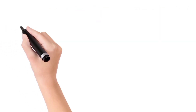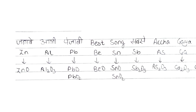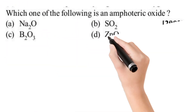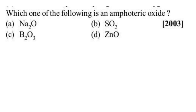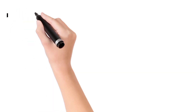Now you all, write down this trick and learn it too. Read it again and again so that it can be memorized well. Now with the help of the trick, give the answers to the given questions which came in JEE Mains and Advanced in the previous years. Write the answers in the comment section.